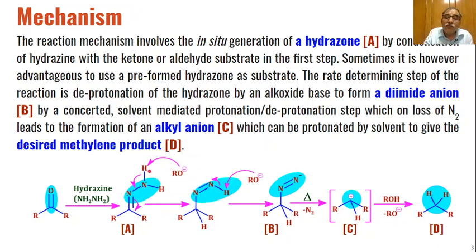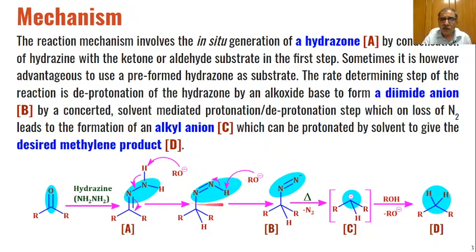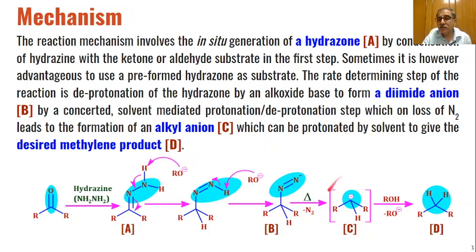The base removes one proton from the NH2 functional group of the hydrazone, and elimination of this proton leads to the formation of a dianion intermediate. One more proton is removed by the base to give a dianion intermediate. The negative charge on nitrogen produces a nitrogen-nitrogen triple bond, which breaks to give an alkyl anion as a further intermediate. This abstracts a proton from the solvent (alcohol) to give the corresponding methylene product.